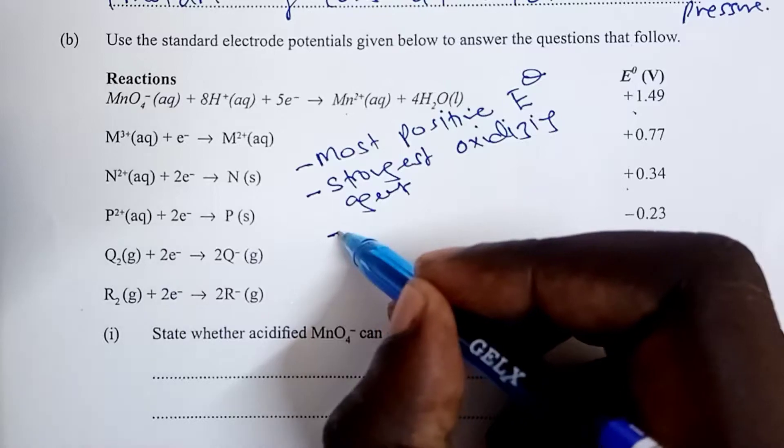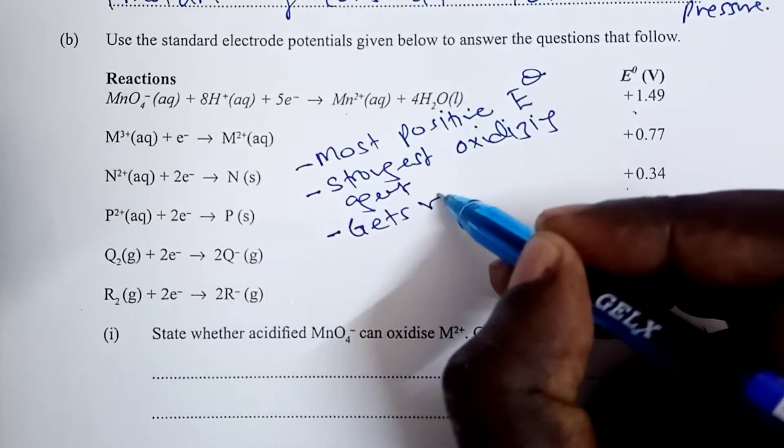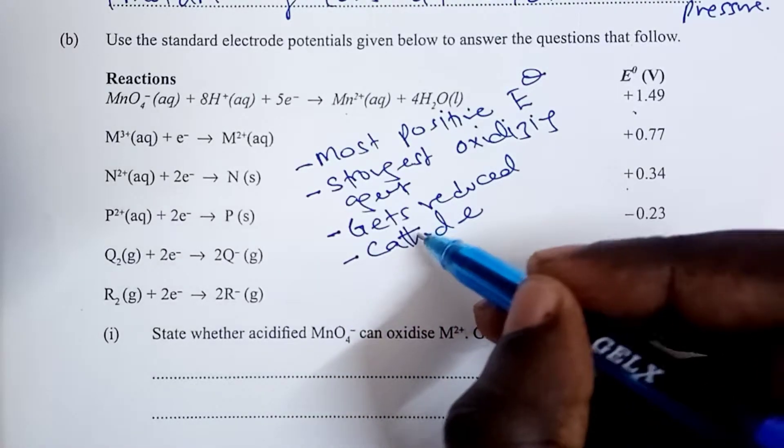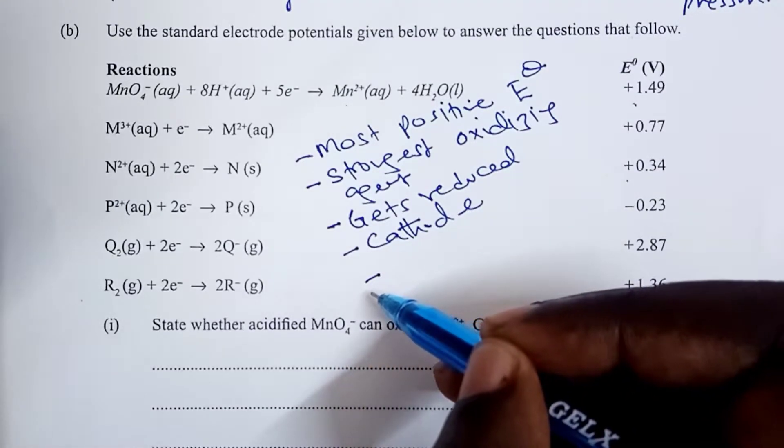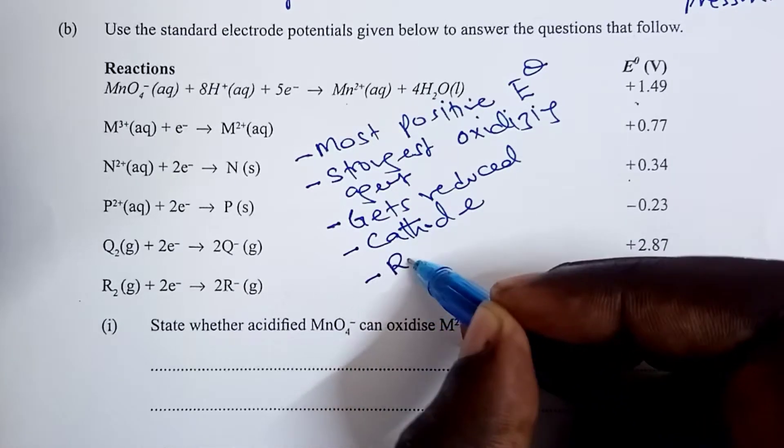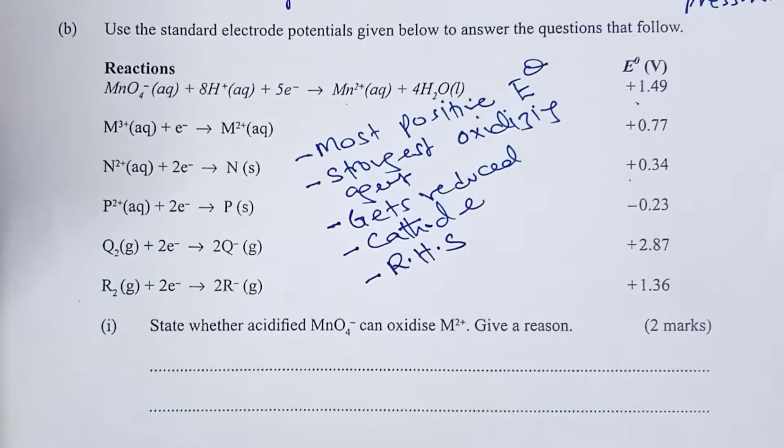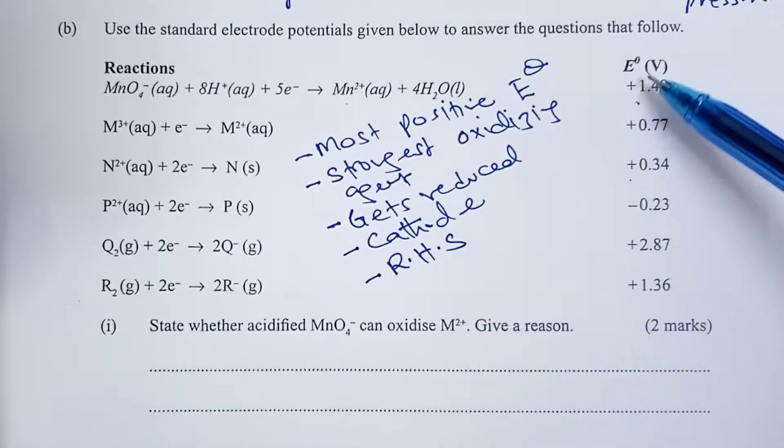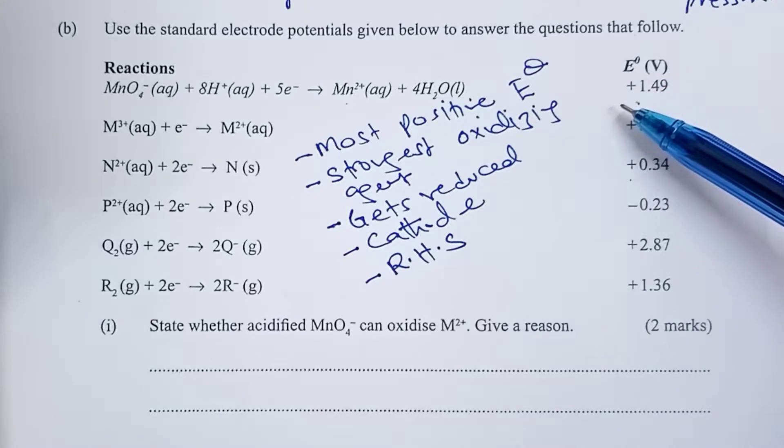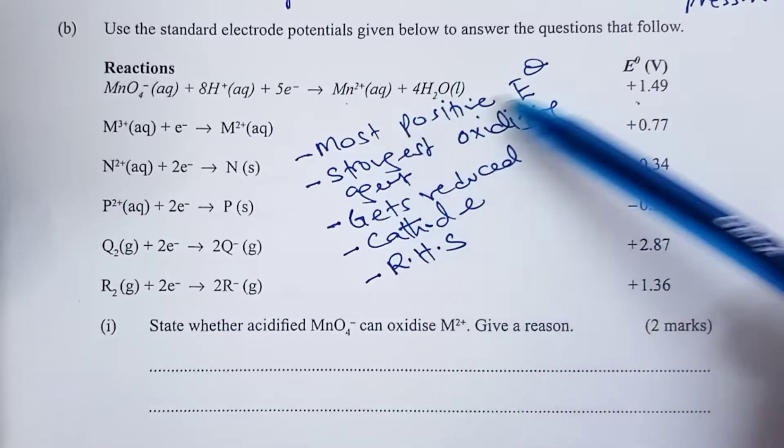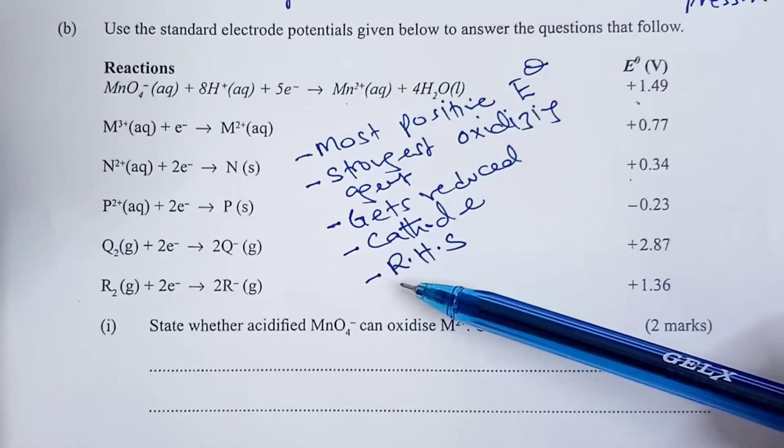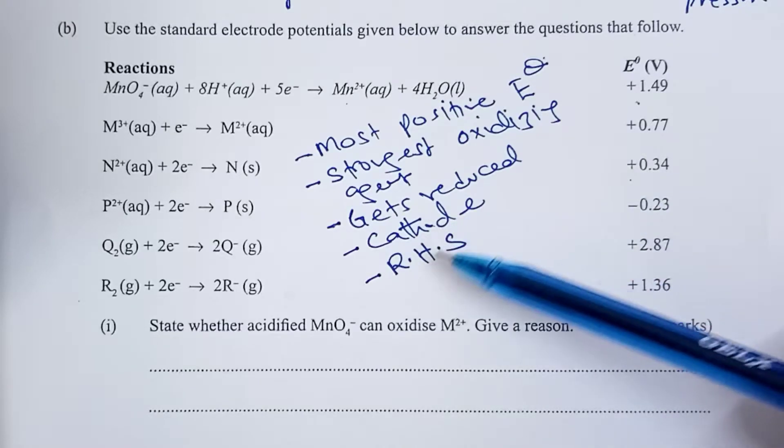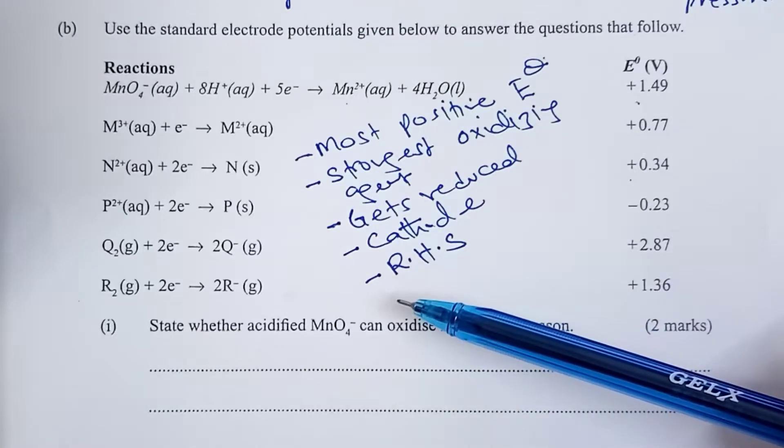Oxidizing agents normally get reduced in reactions. Reduction takes place at the cathode of a complete cell. When drawing cell representation, this cathode is always put on the right hand side. For the most negative E naught, it is the opposite: strongest reducing agent, gets oxidized, forms anode, and is placed on the left hand side.